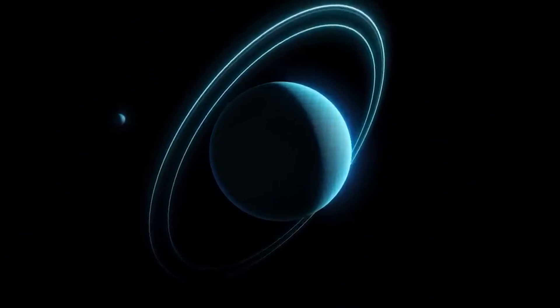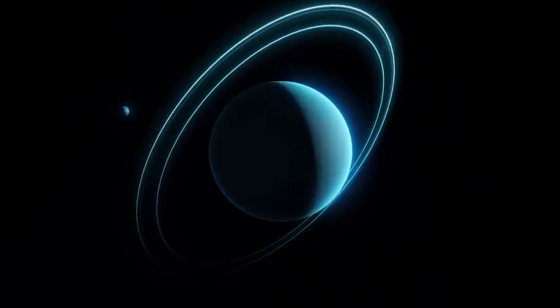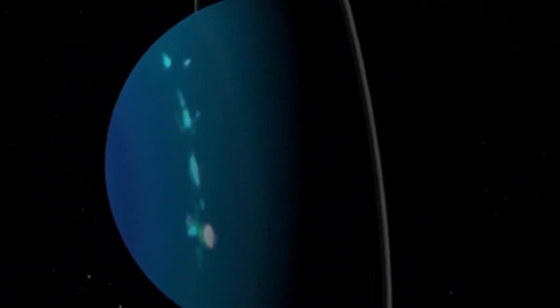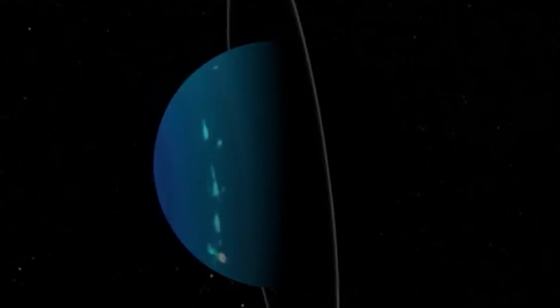For example, the Adams ring is particularly narrow, while the Lassell ring is much wider but less dense. The rings closer to the planet, such as the Galle ring, contain a higher percentage of dust, while the outer rings are composed of more ice.